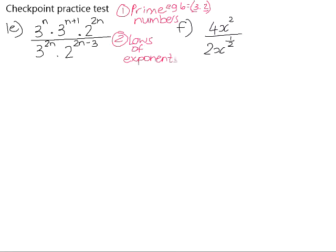If we have a look at number 1e, we have two bases. We have a base of 3 and a base of 2. When you multiply powers with the same base, you add exponents. And when you divide powers with the same base, you subtract exponents.